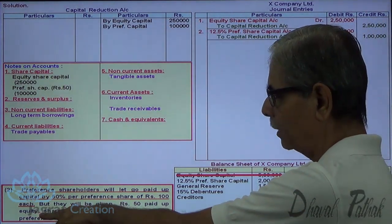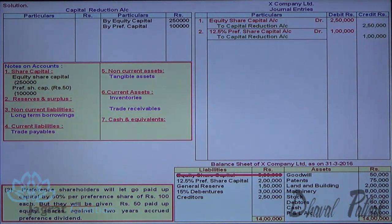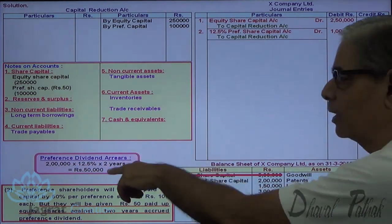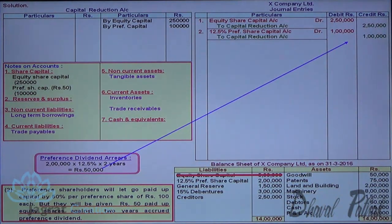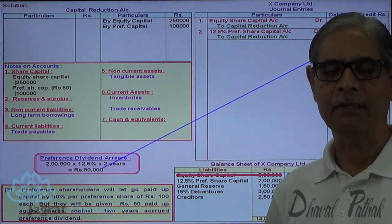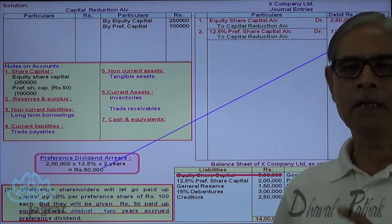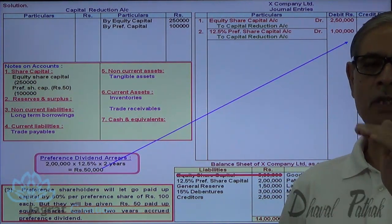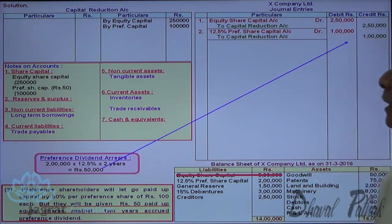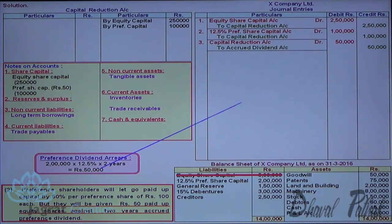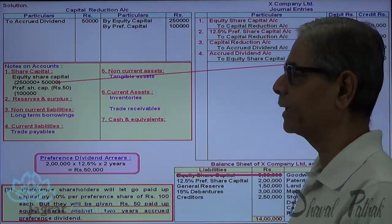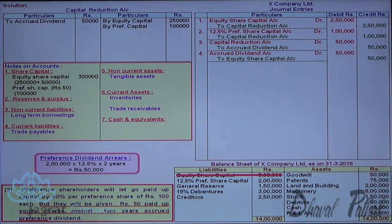They will be given Rs. 50 paid-up equity shares against 2 years' accrued preference share dividend. Working out 2 years' accrued dividend: Rs. 2 lakhs × 12.5% × 2 years = Rs. 50,000. Equity shares are given for Rs. 50,000. This is an unrecorded liability; when settled it is a loss — Capital Reduction Account is debited and the liability account is credited. Then the liability (arrears of preference share dividend) is debited and Equity Share Capital Account is credited. Capital reduction account debit, to accrued dividend account; accrued dividend account debit, to Equity Share Capital Account credit. This point is complete.